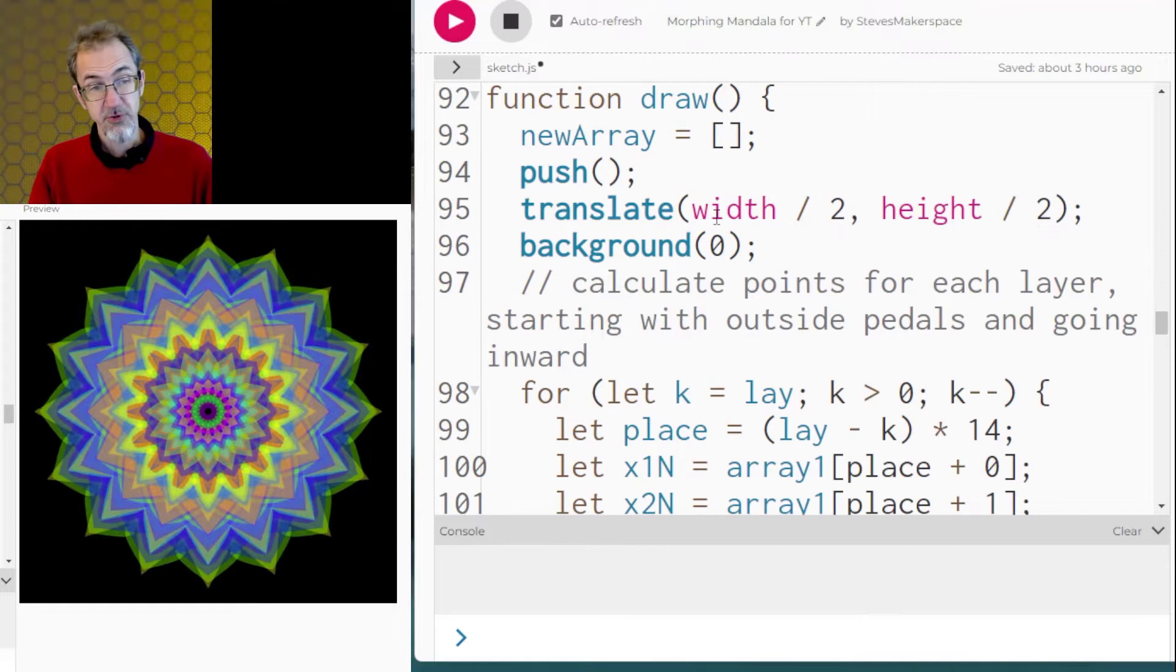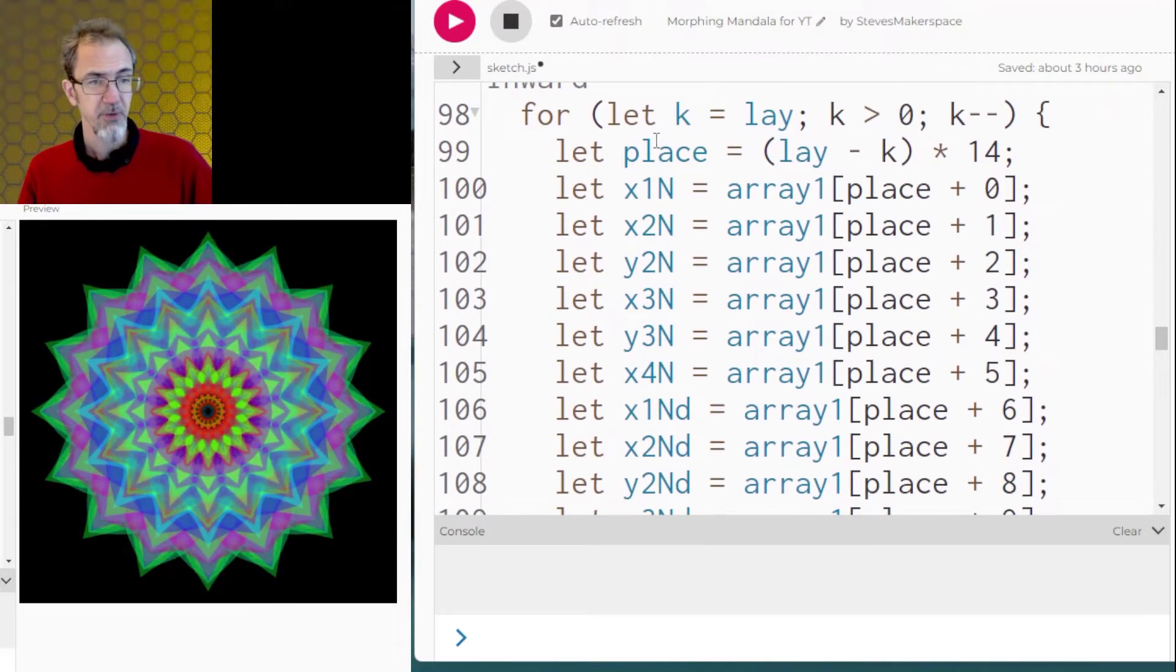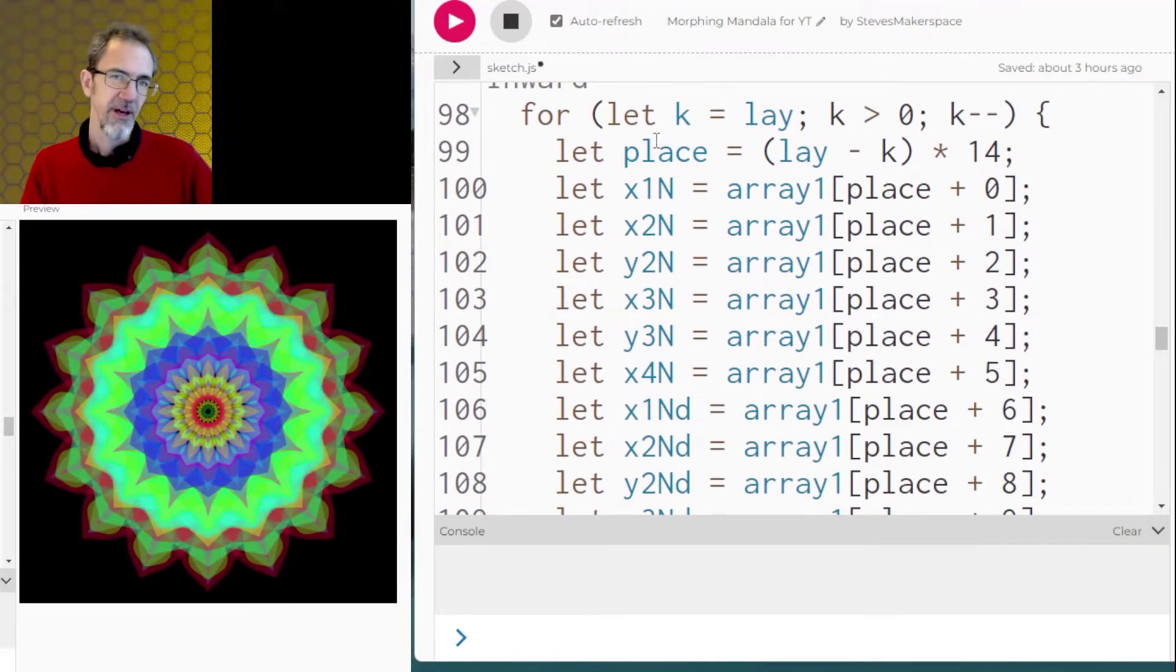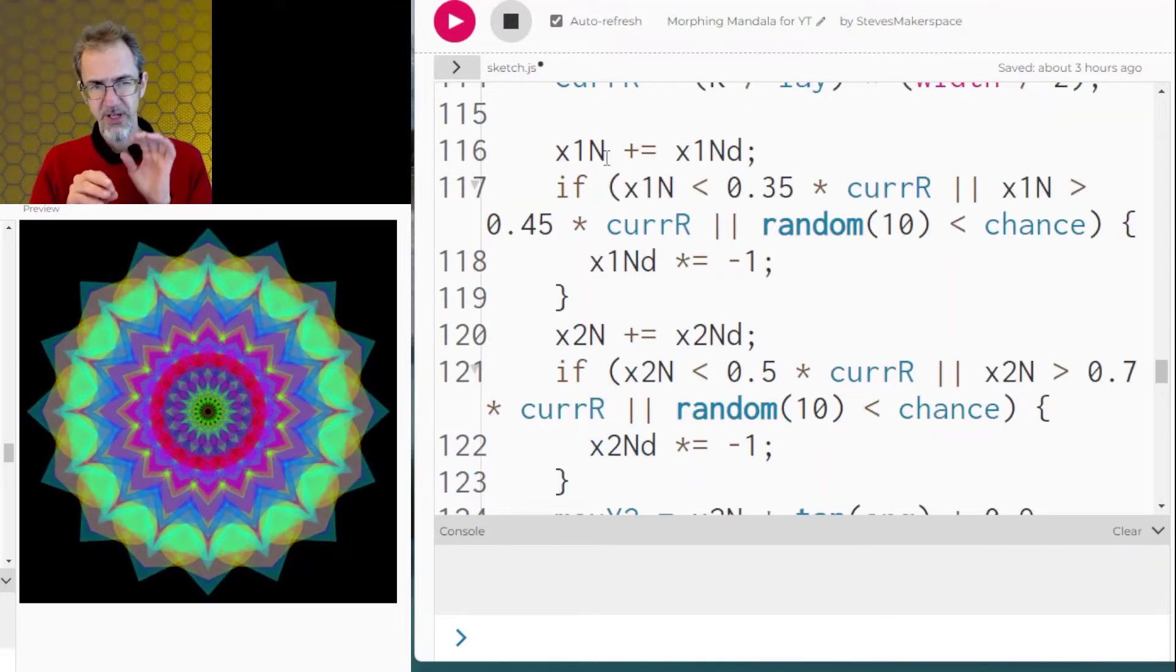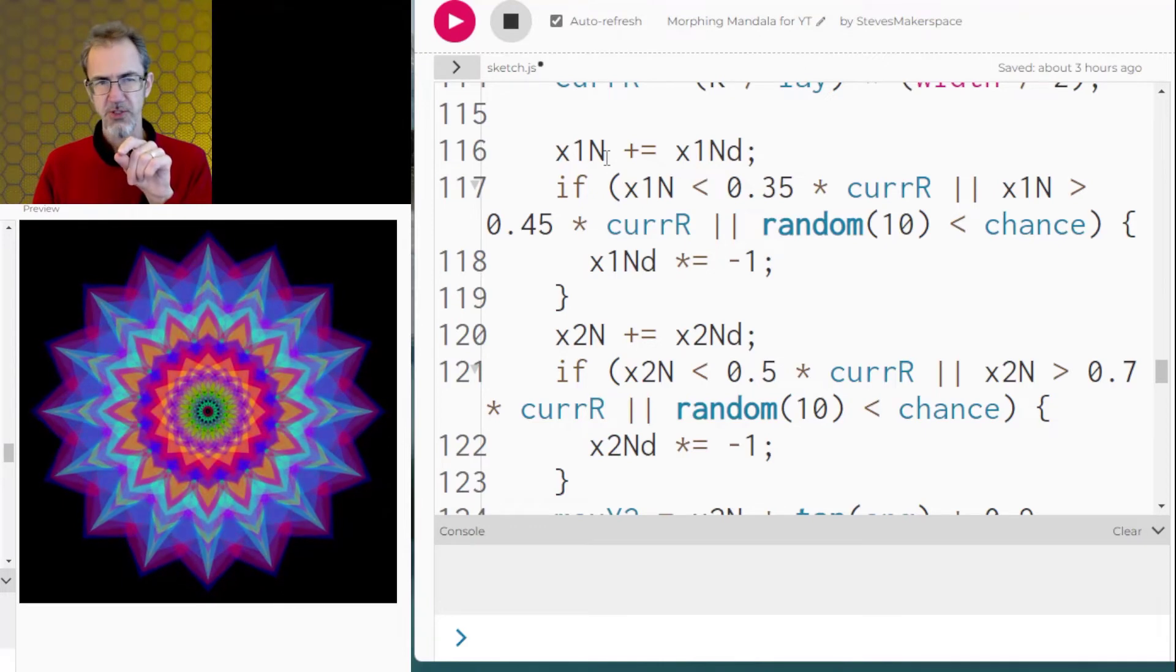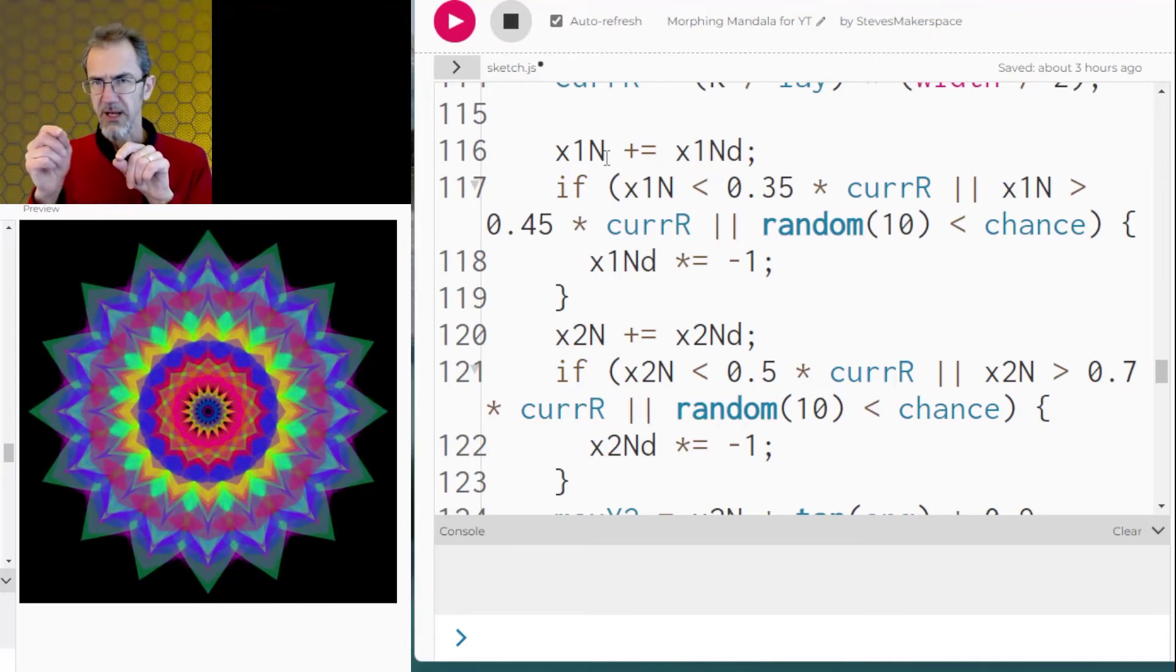Then we get into the draw function and we start pulling information out of that array. So it just is one set of variables in the array. We've got one x position and we've got an x direction.